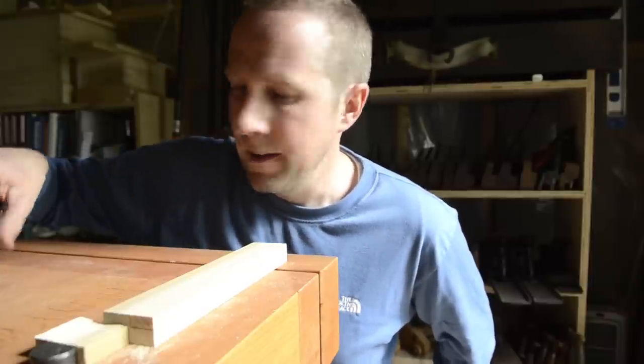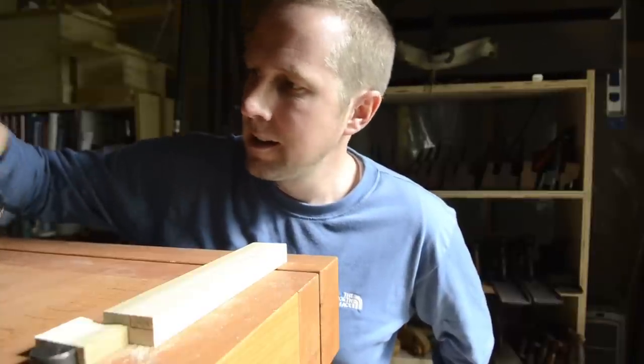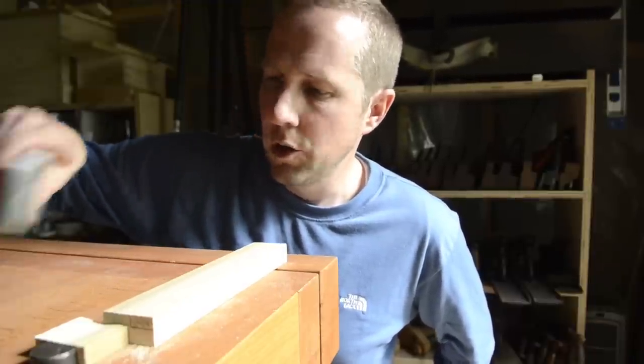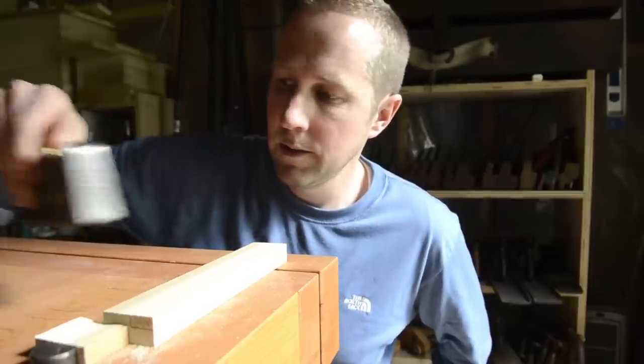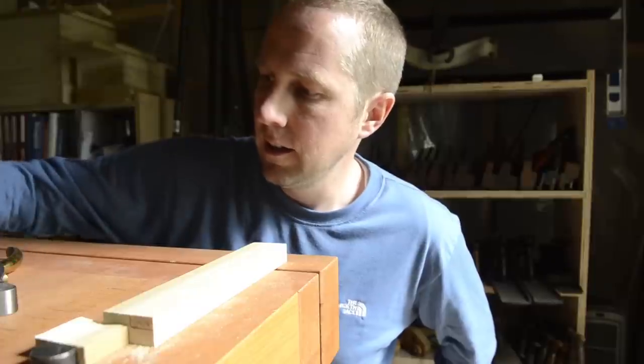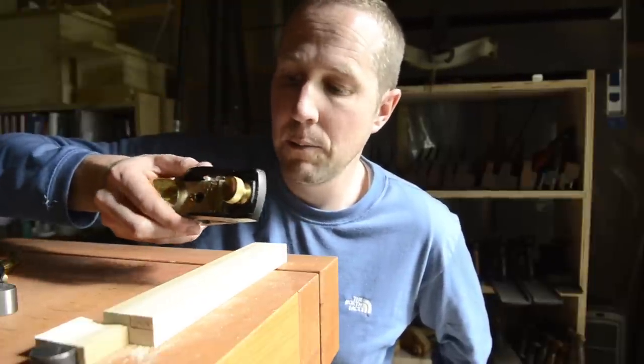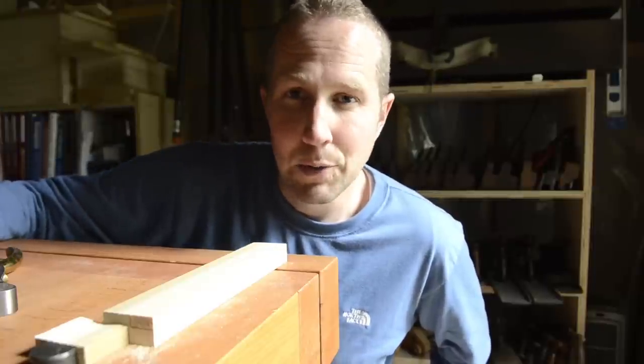Using just simply a marking gauge and a shoulder plane, whether large or medium, and a rabbit plane like this rabbit block plane or a wooden rabbit plane or something else that cuts rabbets or a combination plane.